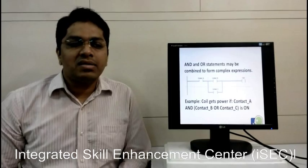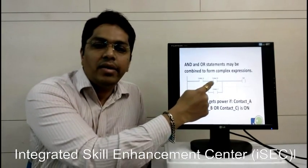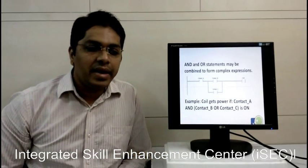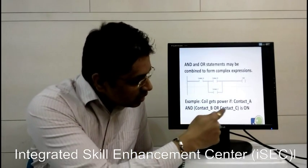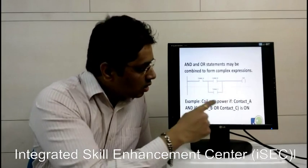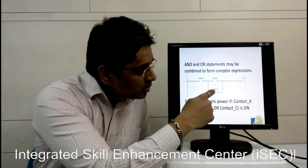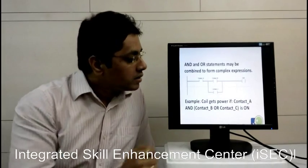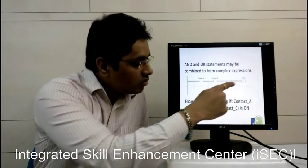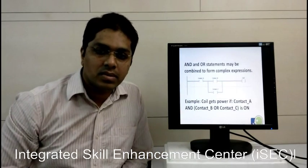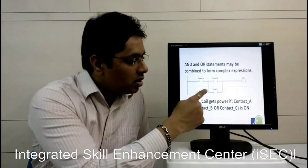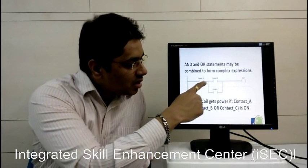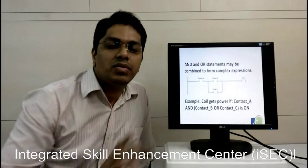We can even form complex logic by combining AND and OR both together in the same rung. Coil gets powered if contact A and contact B or contact C is ON. If you want to turn on the coil, contact A must be ON, and from these two, contact B and contact C, if one of them is ON, the output is ON. When will the coil be OFF? If contact A is OFF, the coil is OFF though contact B and contact C both are ON. Or if contact A is ON and contact B and contact C both are OFF, the output will be OFF.